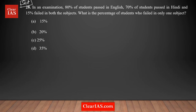In an examination, 80% of students passed in English, 70% of students passed in Hindi, and 15% failed in both the subjects. The first information is about passing, and then you have information about how many failed in both subjects — this is a very important key point. The question is asking: what percentage of students failed in only one subject?